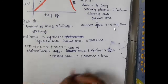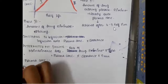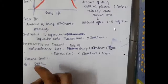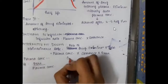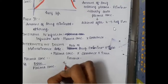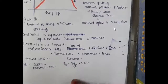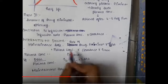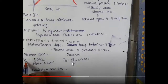Volume of distribution is equal to dose of the drug divided by plasma concentration. Clearance is related by the formula: half-life equals volume of distribution multiplied by clearance divided by 0.693. Volume of distribution equals dose divided by plasma concentration.